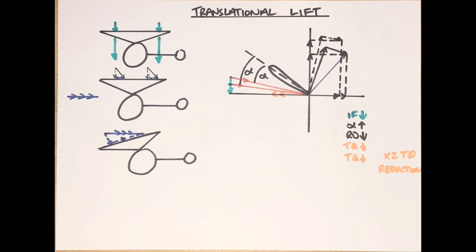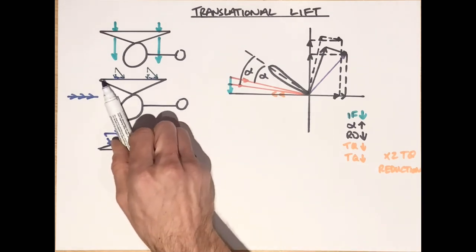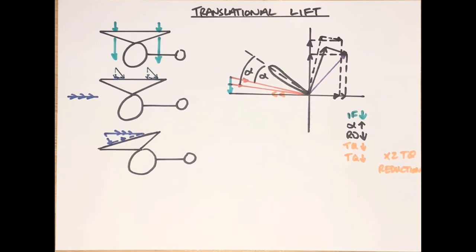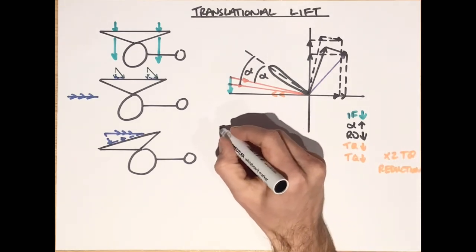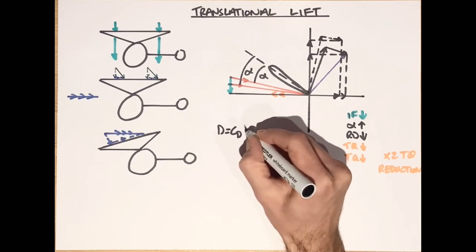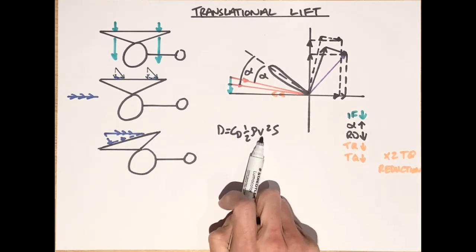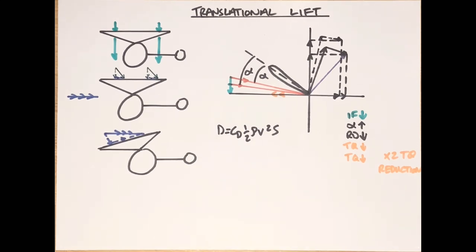When we can't achieve that reduction, as we start to increase speed - and those who have flown helicopters know that to go faster you have to keep moving the cyclic further and further forward - we have to keep tilting that total rotor thrust more and more towards the horizontal to drag the aircraft forward. The drag equation is roughly the same as for lift: drag equals the coefficient of drag times half rho v-squared times S. So as we increase speed, drag will increase at the square of the speed.